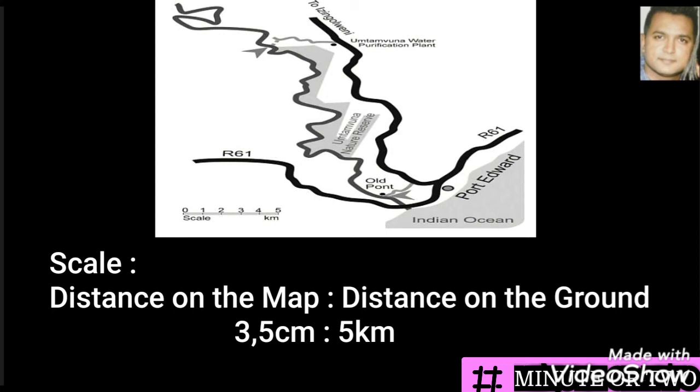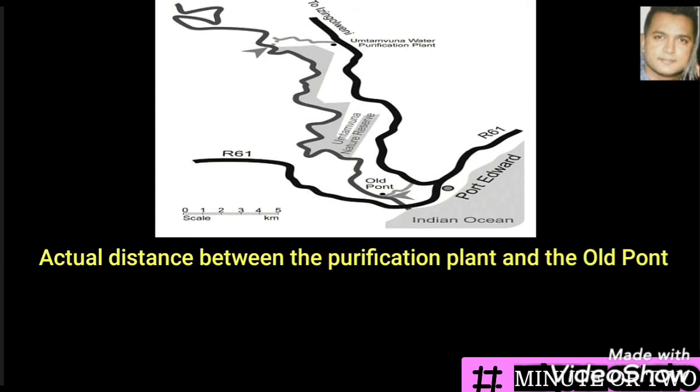For this particular question we are able to work with this scale. The question asks us to find the actual distance between the purification plant and the old pond. Actual distance means the distance on the ground.